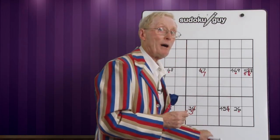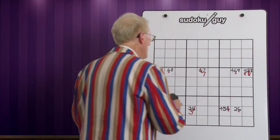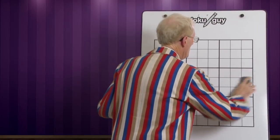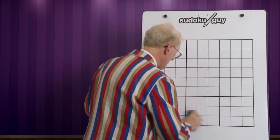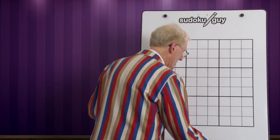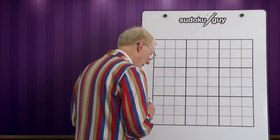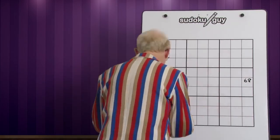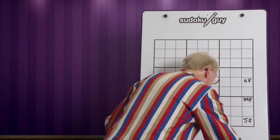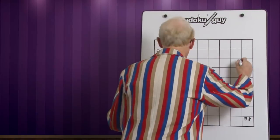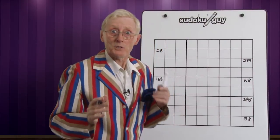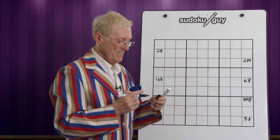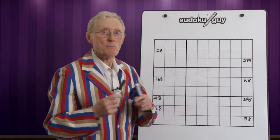Now let's go on to the next part, which is where we use a row to eliminate numbers in a column. I'm going to erase this and show you the opposite. There are two ways of looking for an X-Wing: either by looking for two numbers only in columns, or two numbers only in a row. Now we come to the spot where we're looking for rows that enable us to get numbers eliminated in columns.